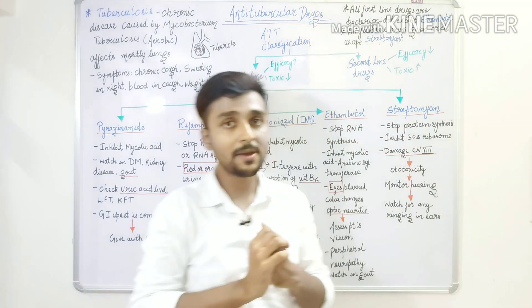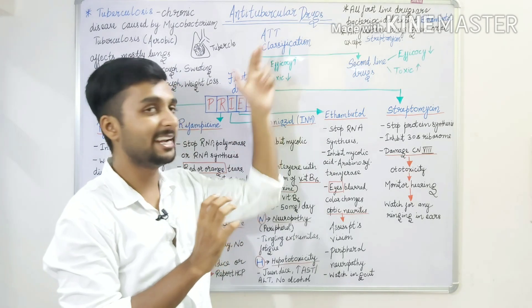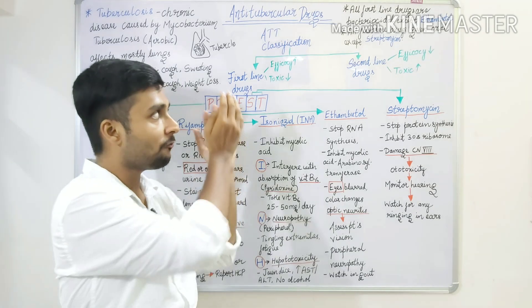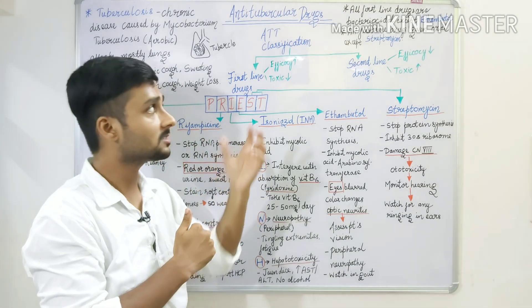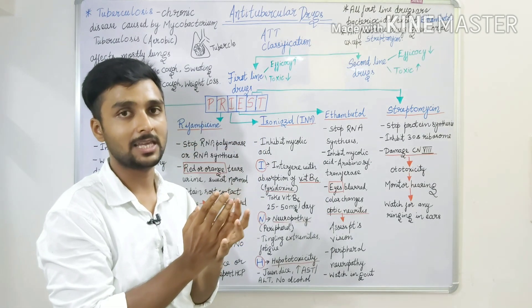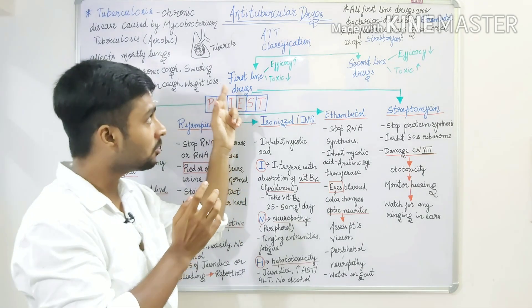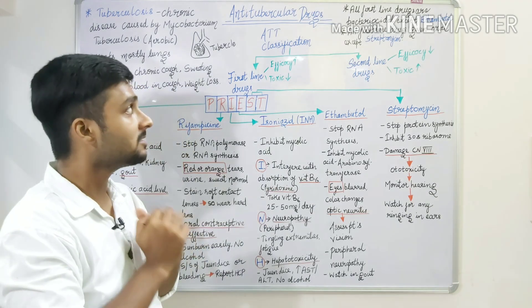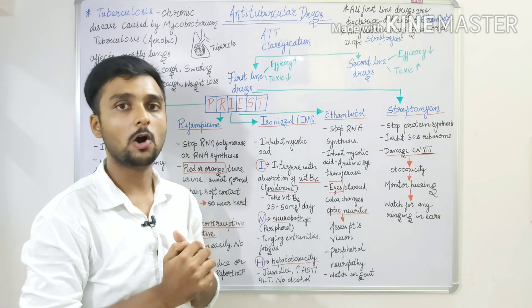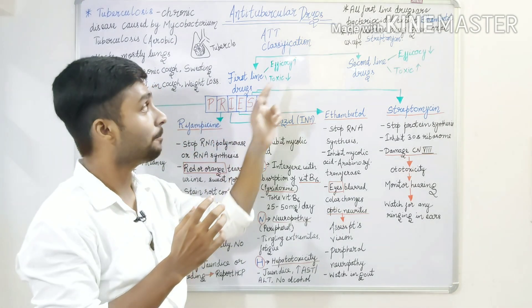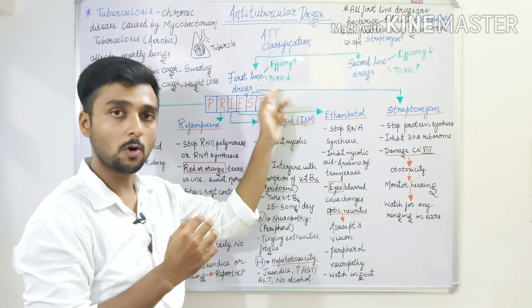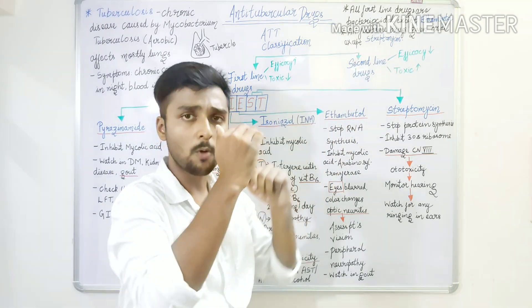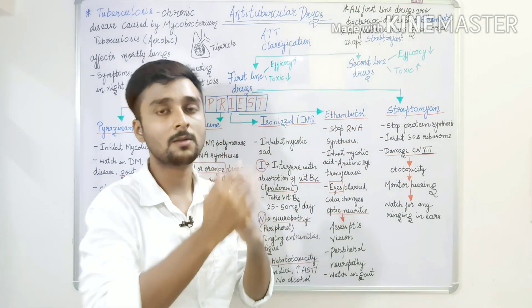We have to classify our ATT drugs in two ways: first-line drugs and second-line drugs. First-line drugs, mostly, we prefer and we follow the proper regimen. If the patient fails to follow this regimen, then we move on to second-line drugs. First-line drugs have efficacy and acting power that is very high, but the toxicity is very low. On the other hand, second-line drugs have lower efficacy and higher toxicity.